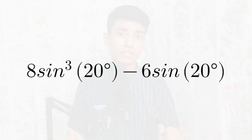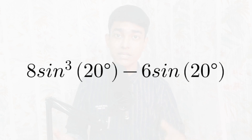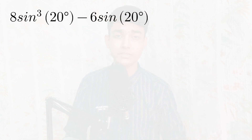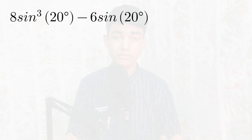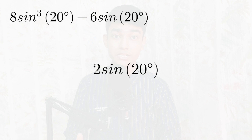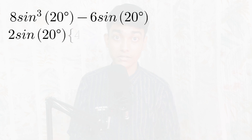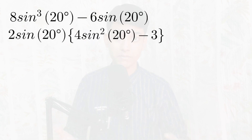So what should we do to simplify this? The only method is to use trigonometric identities and simplification tools. Taking the equation 8 sin³(20°) minus 6 sin(20°), we first observe that from both terms we can take out 2 sin(20°) as a common factor, since 8 and 6 are both multiples of 2. Inside the bracket it becomes 4 sin²(20°) minus 3.